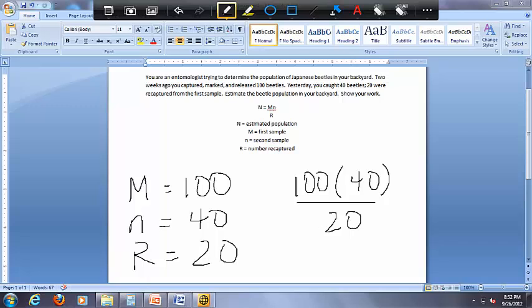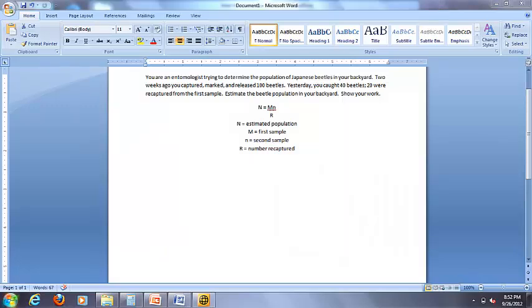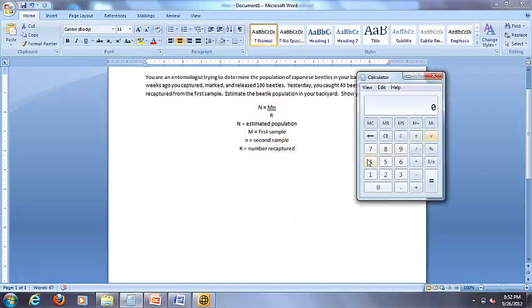We multiply that out. I'm sure you could probably do this in your head, but we are going to do it on a calculator so that you can see that. So we've got 100 times 40 equals 4,000. And then divided by 20, as our recaptures, equals 200.